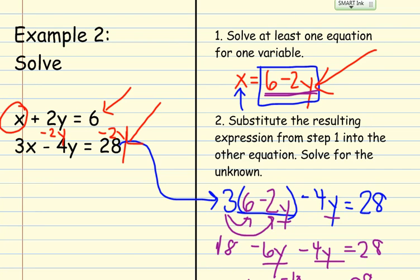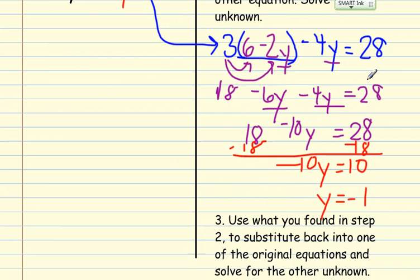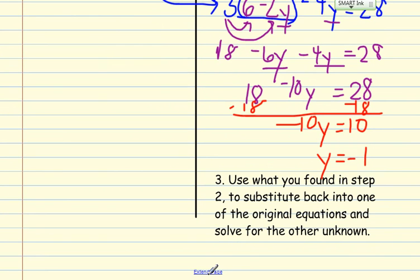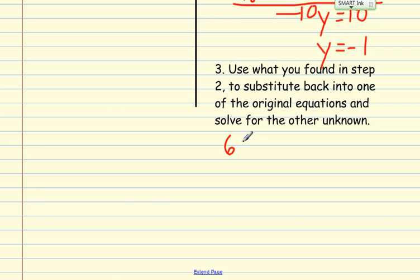So actually, I'll just copy it down here. So x equals 6 minus 2y. Let's scroll back down to step 3. 6 minus 2y. And we just found that y is negative 1.